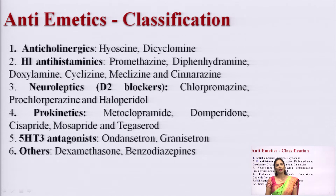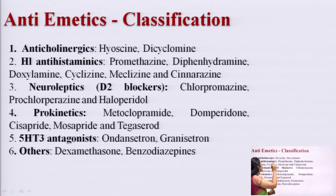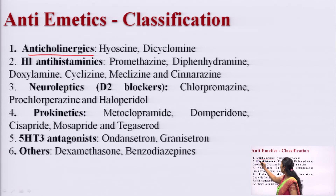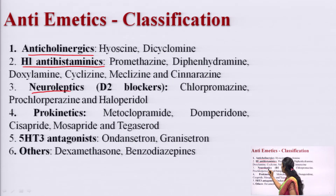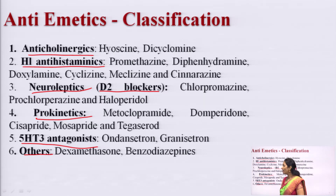Now we will discuss anti-emetics. Anti-emetics are opposite to emetics — if a particular person is having vomiting sensation, to decrease this vomiting you can give anti-emetic drugs. Anti-emetics have been classified into: anticholinergics, H1 antihistamines, neuroleptics (also called D2 blockers), prokinetics, 5-HT3 antagonists, and others.